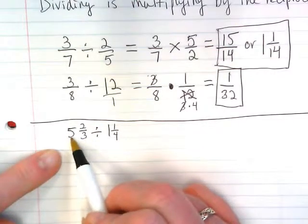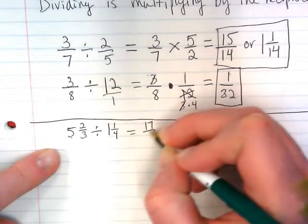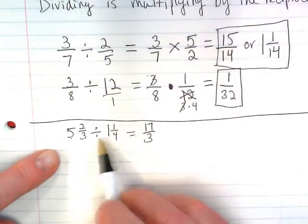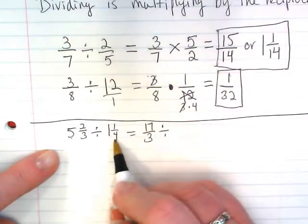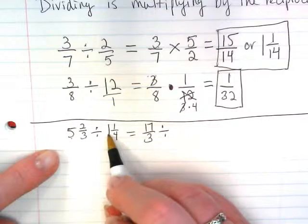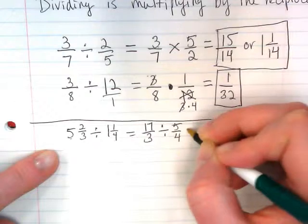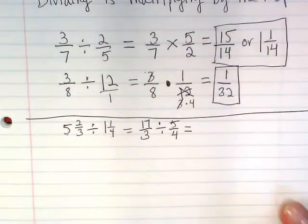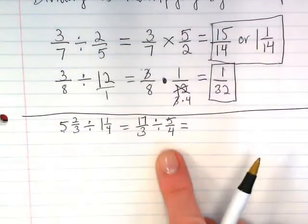3 times 5 is 15, plus 2 would be 17 over 3. And then I'm going to change this into an improper fraction. 4 times 1 is 4, plus 1 is 5.